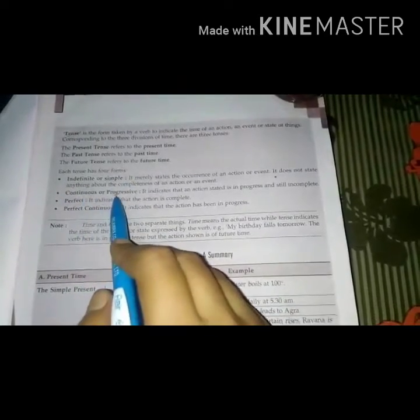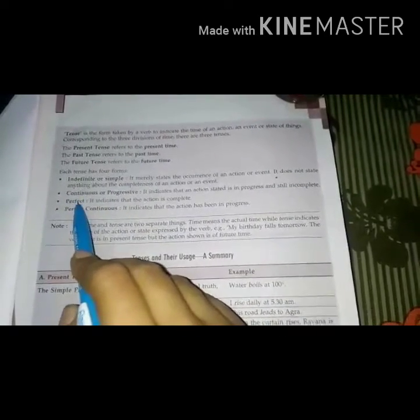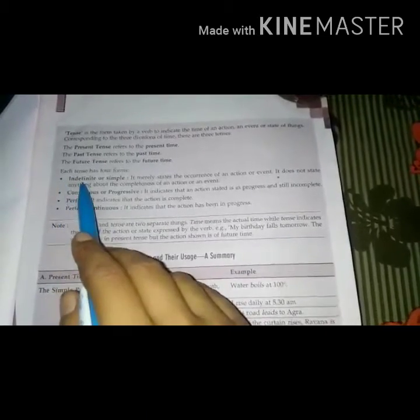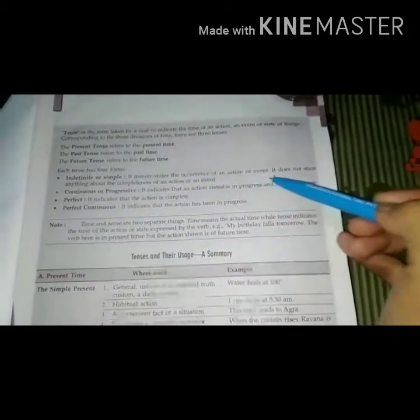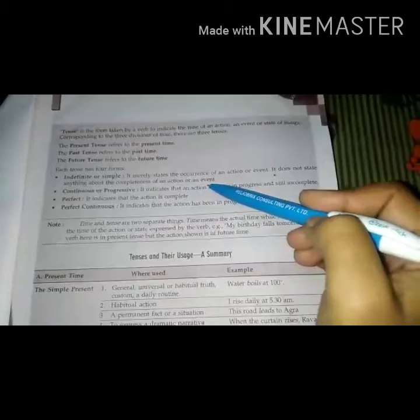The first part is indefinite or simple. Second, continuous or progressive. Third, perfect. Fourth, perfect continuous. Indefinite merely states the occurrence of an action or event. It does not state anything about the completeness of an action or an event.